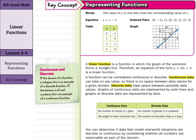You can determine if data that model real-world situations are discrete or continuous by considering whether all numbers are reasonable as part of the domain. If the domain of a function is integers, it's an example of a discrete function. If it's just one, two, three, we're not going to have the room in between. But if it's all real numbers, this is an example of a continuous function since you can have your decimals, your fractions, etc.